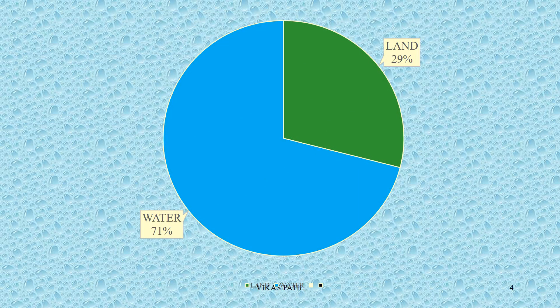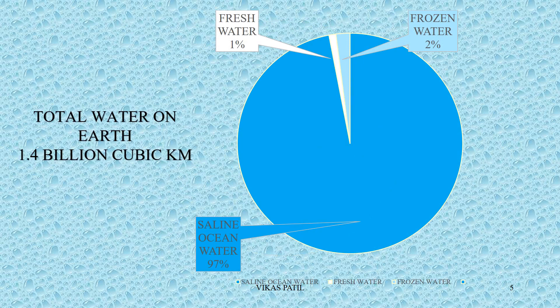Almost three-fourths of the surface of the Earth is covered with water. The total water present on Earth is around 1.4 billion cubic kilometers. Out of which, 97% is in the form of saline water in oceans. The remaining 3% is also not directly usable. Of this 3%, 2% is in the form of frozen water in ice caps and glaciers, and 1% is in the form of fresh water in lakes, rivers, and underground water.